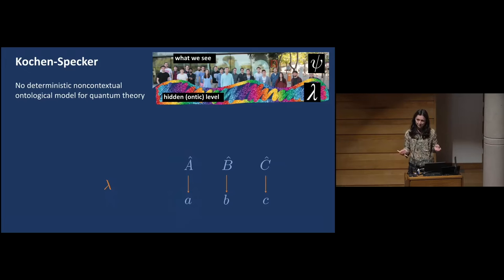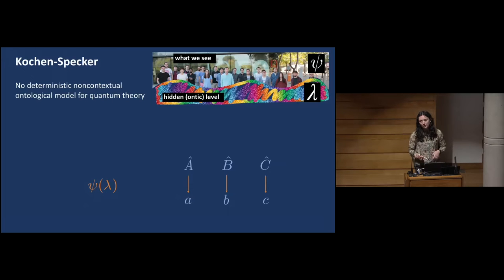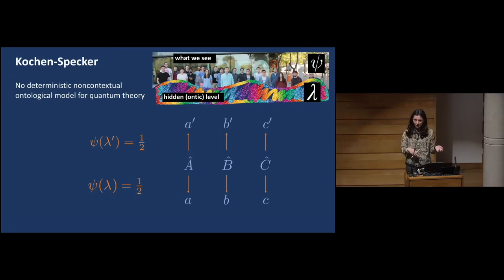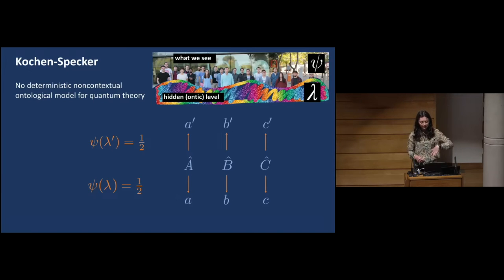How does this reproduce the probabilistic nature of quantum theory? The idea is that when we're in a quantum state, we don't know exactly which ontic state we're in — only with some probability. For example, psi could mean with 50% chance we're in ontic state lambda prime, and 50% chance in lambda, giving 50-50 chance of outcomes a or a prime. The Kochen-Specker theorem says that for quantum systems of dimension greater than two, you can't describe quantum theory by one of these models.